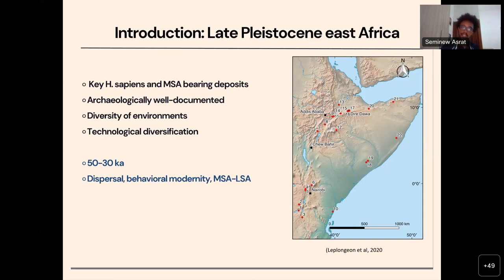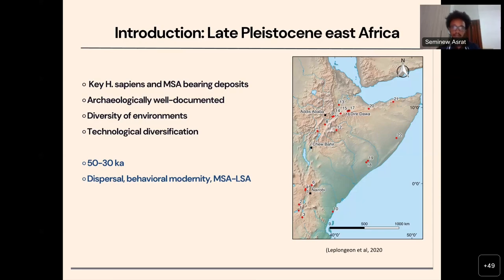Archaeologically, the site is very documented and environmentally based on global environmental records, it has been indicated that there are diverse environmental and climatic fluctuations. Technologically, even though the consequences attributed to the MSA artefacts are attributed regionally and locally, there have been diverse materials. Particularly from the last 50 to 30,000 years ago, there is emergence of behavioural modernity in East Africa and particularly in South Africa and the rest of Africa. Technological changes have also been documented from the MSA to the later Stone Age. So this is a very critical time period.